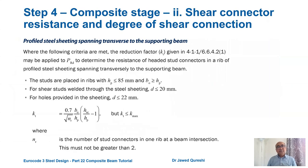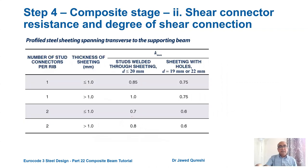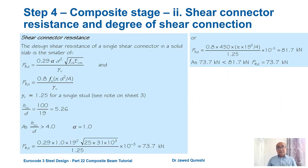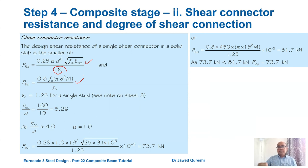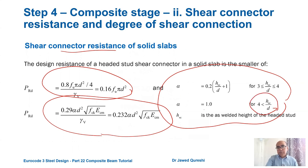The reduction factor for transverse profile sheeting is applied using the formula involving the number of studs per trough, average trough width b0 (= (120+170)/2 = 145 mm), profile height hp = 60 mm, and stud height hsc. With one stud per trough, the calculated factor is 1.13, but the maximum reduction factor kt,max = 1.0, so kt = 1.0.